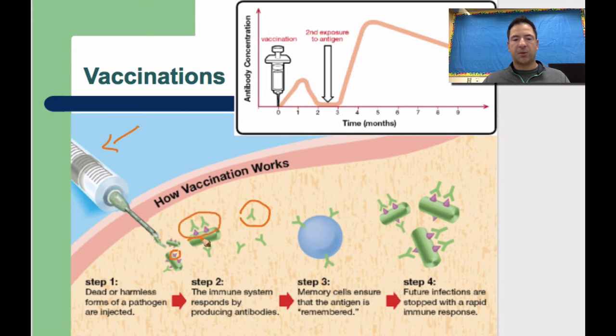So now the immune response is initiated and so then after that happens, we have the memory cells in step three right here. And the memory cells are going to ensure that the antigen is remembered. And then in step four, if there's any future infections, the immune response is going to be triggered and there's going to be that rapid immune response that's going to stop that pathogen immediately. And you can see that here.